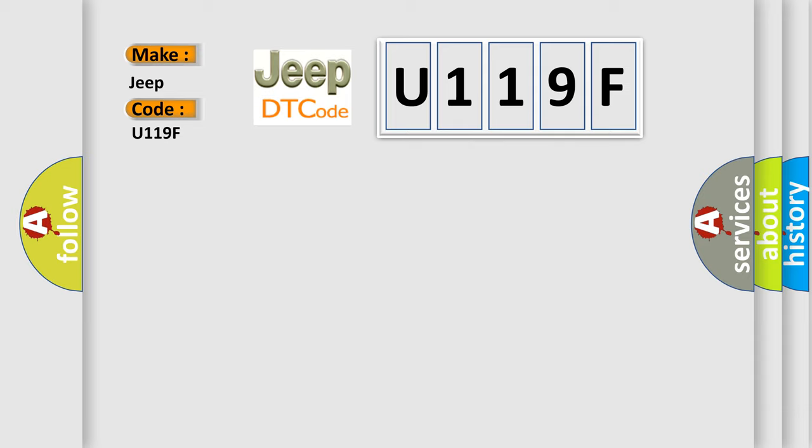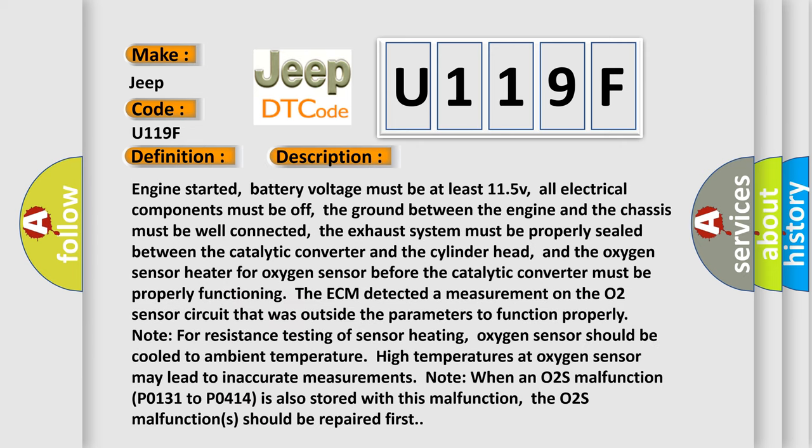The basic definition is O2 control bank 1 system 2 rich. And now this is a short description of this DTC code. Engine started, battery voltage must be at least 11.5V, all electrical components must be off, the ground between the engine and the chassis must be well connected, the exhaust system must be properly sealed between the catalytic converter and the cylinder head.